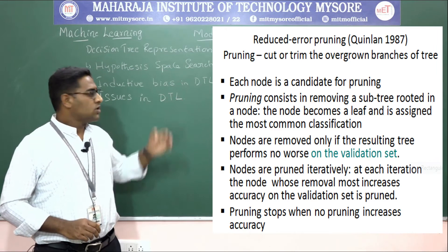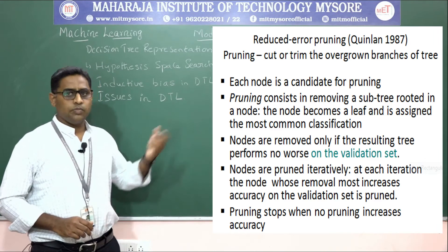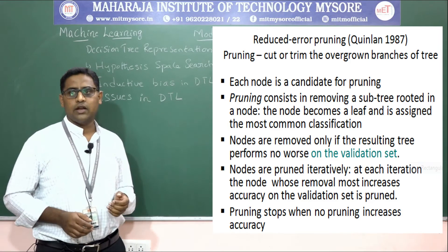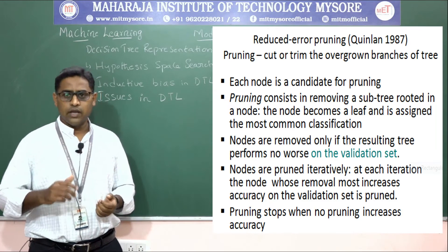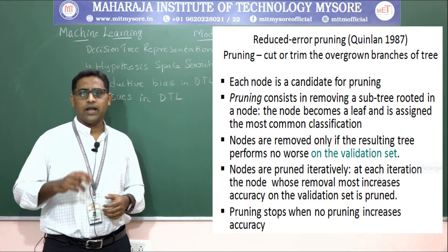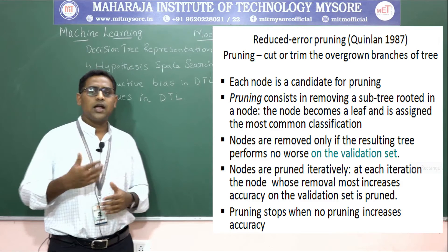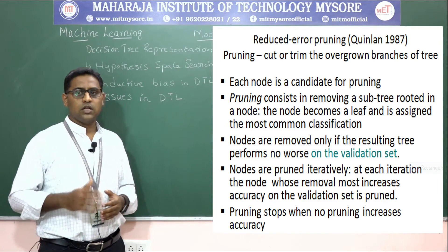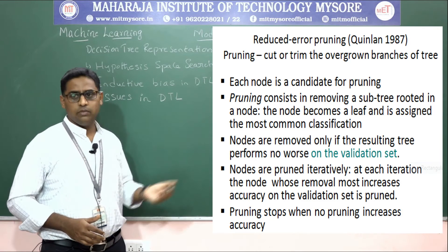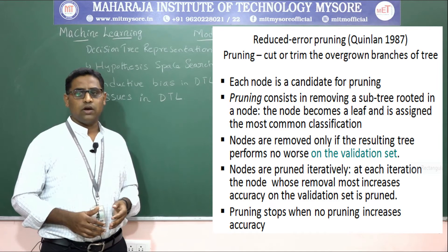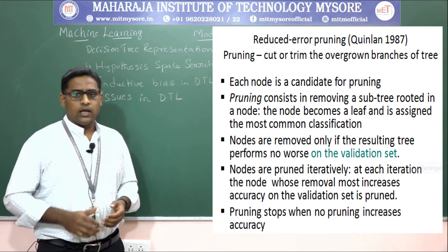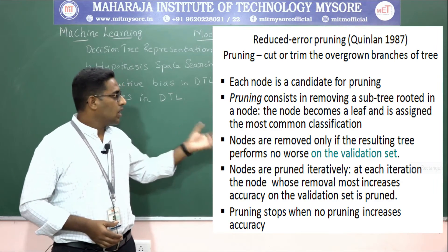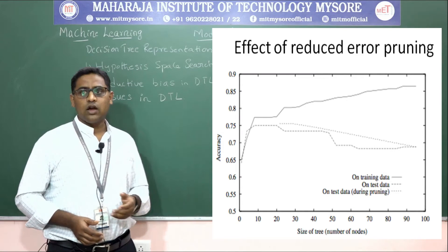Reduced error pruning was introduced by Quinlan in 1987. Pruning is the cutting or trimming of overgrown branches. Each node is a candidate for pruning, which involves removing a subtree rooted at that node — the node becomes a leaf assigned the most common classification. Nodes are removed only if the resulting tree performs no worse on the validation set. At each iteration, the node whose removal most increases validation accuracy is pruned, and pruning stops when no pruning increases accuracy.